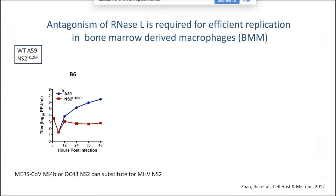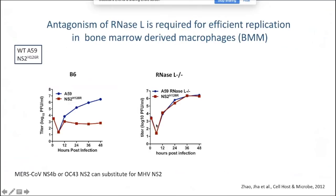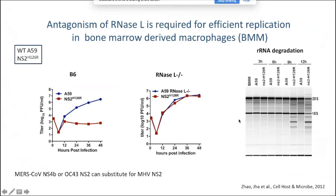We looked at replication of wild-type A59 and NS-2-mutant A59 in bone marrow-derived macrophages. The wild-type virus replicates to 10^7 PFU—very high titer—whereas the mutant virus is almost completely prevented from replicating above background. However, when we perform the same replication assay in macrophages derived from RNase L knockout mice, the mutant virus recovers completely. So viral replication is completely dependent on the ability of NS-2 to antagonize RNase L. We can also see that in wild-type-infected cells, 28S and 18S ribosomal RNA are perfectly intact, but in mutant-infected cells, the RNA is degraded due to RNase L activation.